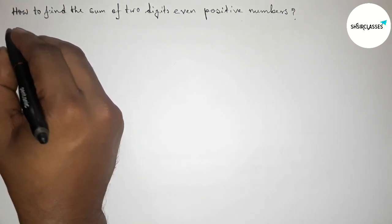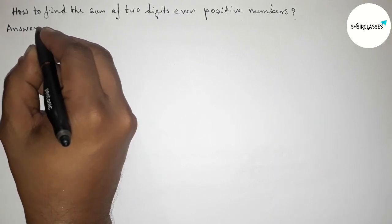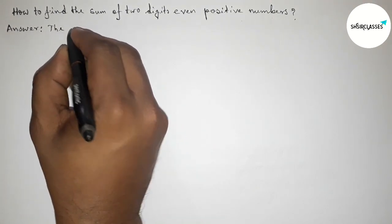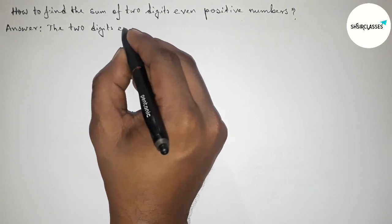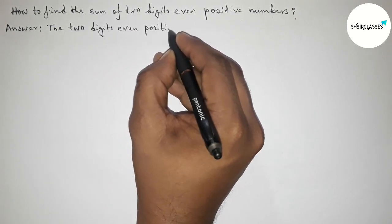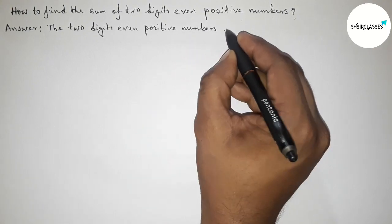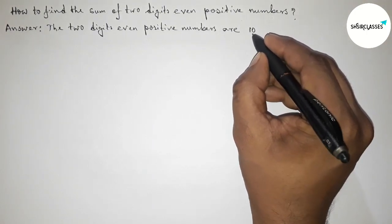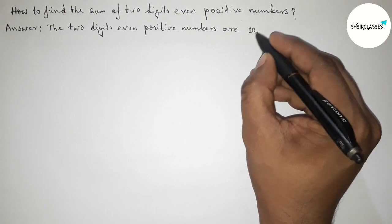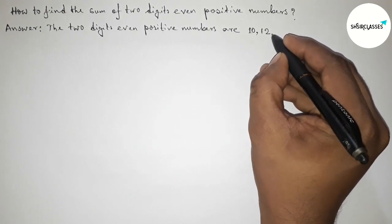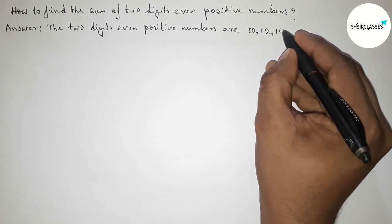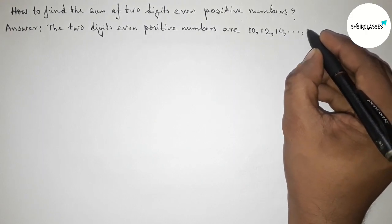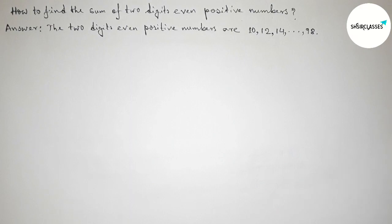First, let us solve this problem. We write down all the two-digit even positive numbers. The first two-digit even positive number is 10, then 12, then 14, then 16, and continuing this way, the last two-digit even number is 98.